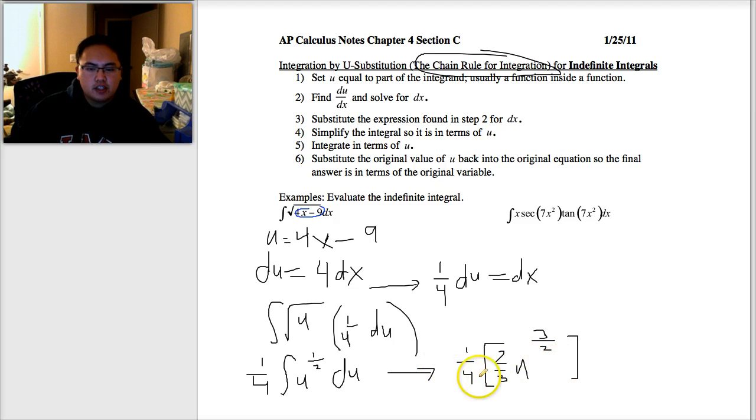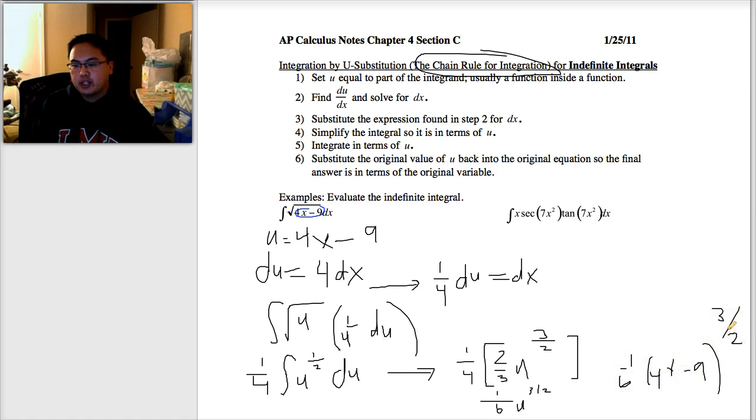So when I add 1, this becomes 3/2. So the antiderivative of U to the 1/2 is 2/3 U to the 3/2. Now all I have to do is multiply this out. This 1/4 times 2/3, when I reduce, becomes 1/6 U to the 3/2. And you just took the integral. But technically, you're not done. Because the problem was in X, my answer cannot be in U. So I need to put this back into X. U is 4X minus 9. So the antiderivative of the square root of 4X minus 9 is 1/6, 4X minus 9 to the 3/2.